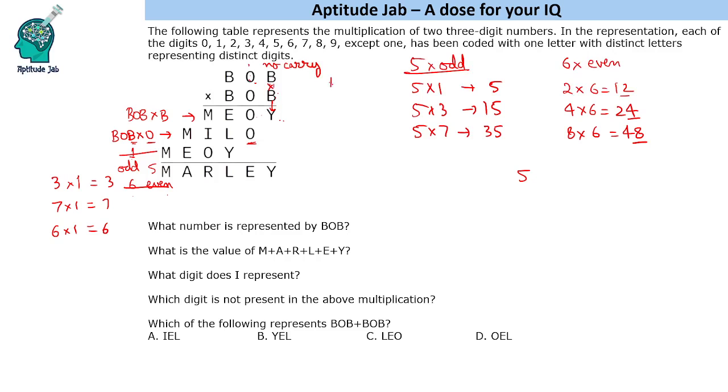So it means B into B can be one. B has to be an odd number. So if B is one, so one into one is one but it should have been B. Then we have another possibility is three into three. So three into three is nine without a carry. And if we take any other digit it gives a carry. So we have determined that BOB is three five three.